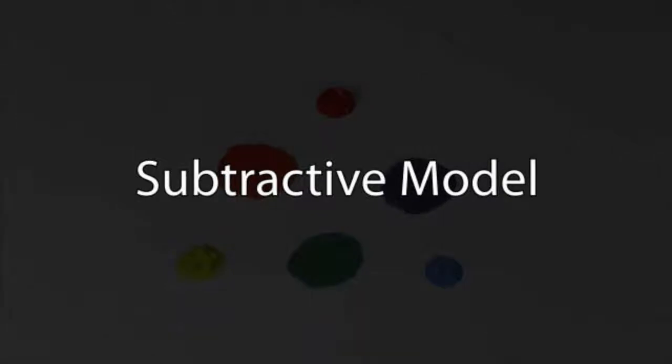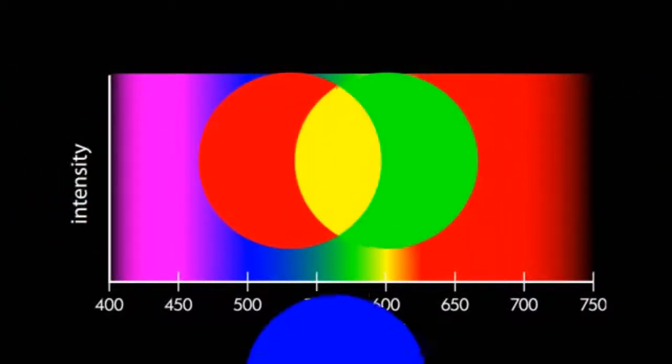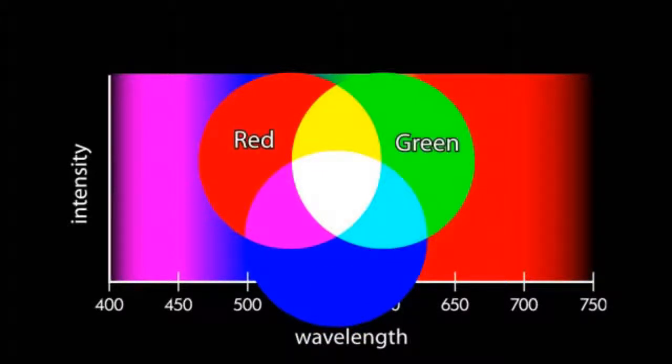However, when we mix light, it follows an additive model. The additive model is also called the RGB model because when we combine the primary light colors of red, green, and blue, it produces additional colors.